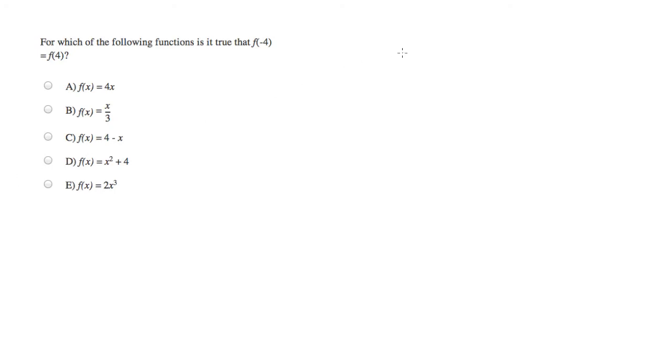For example, in the function that we're given in answer choice A, we're told f of x equals 4x. The input is defined by what you see in the parentheses. In this case, it's x. So the input will go right in here for the x, and the output will be whatever this evaluates to.